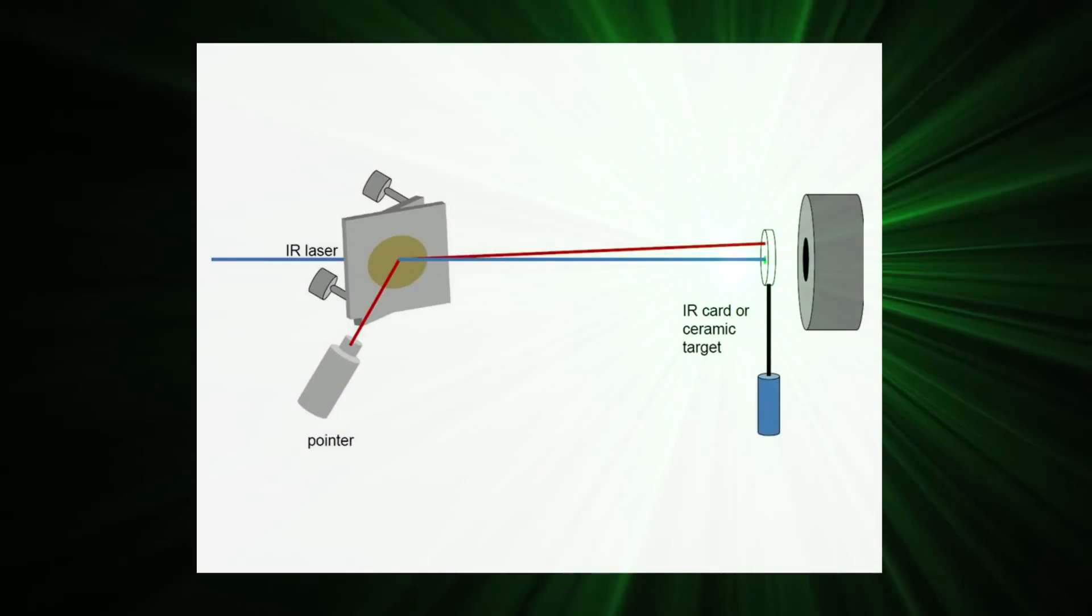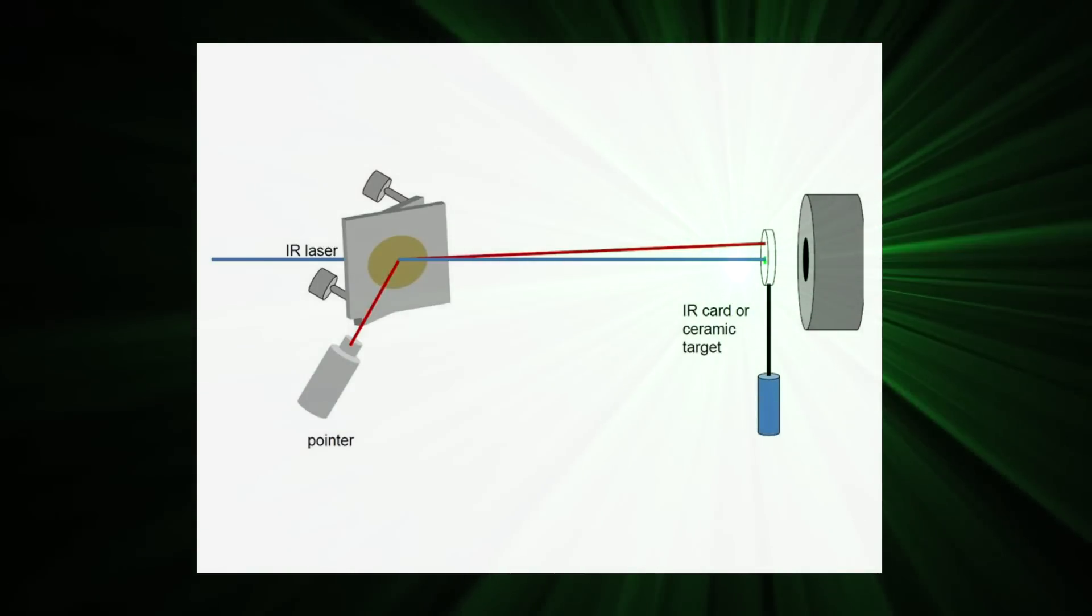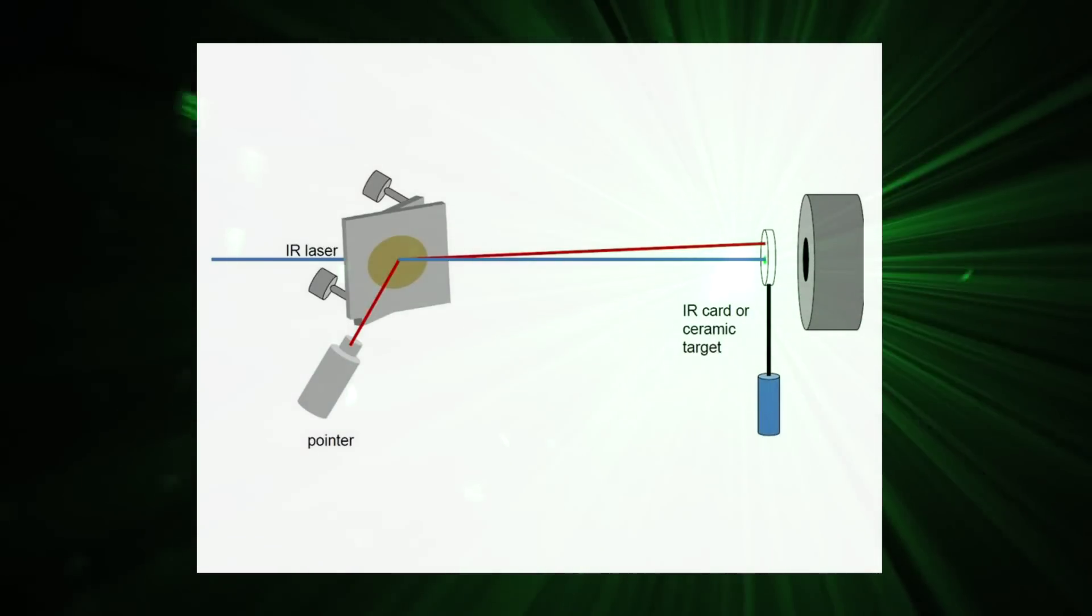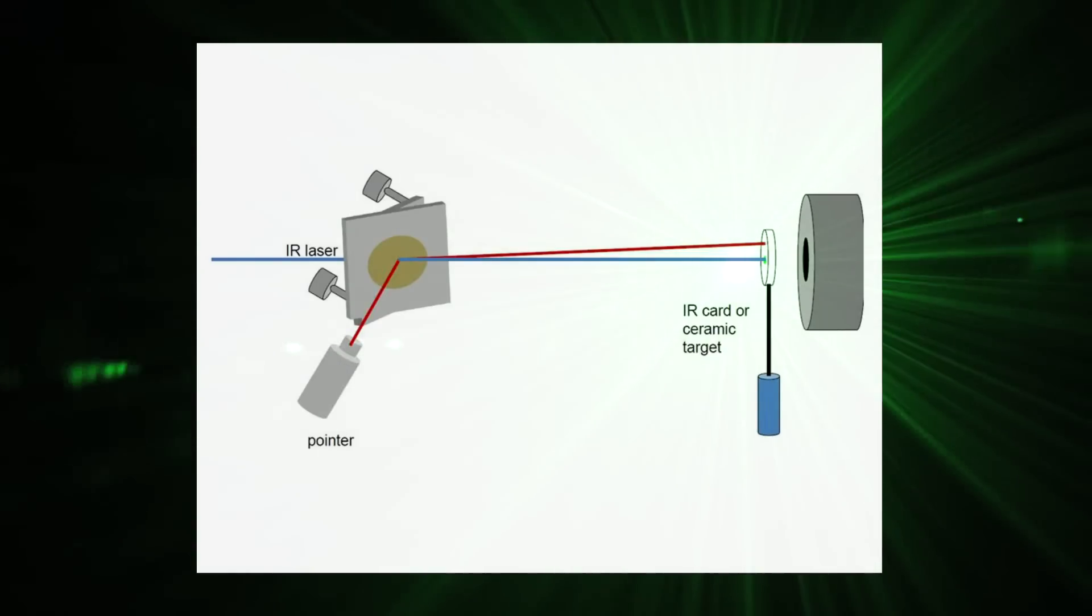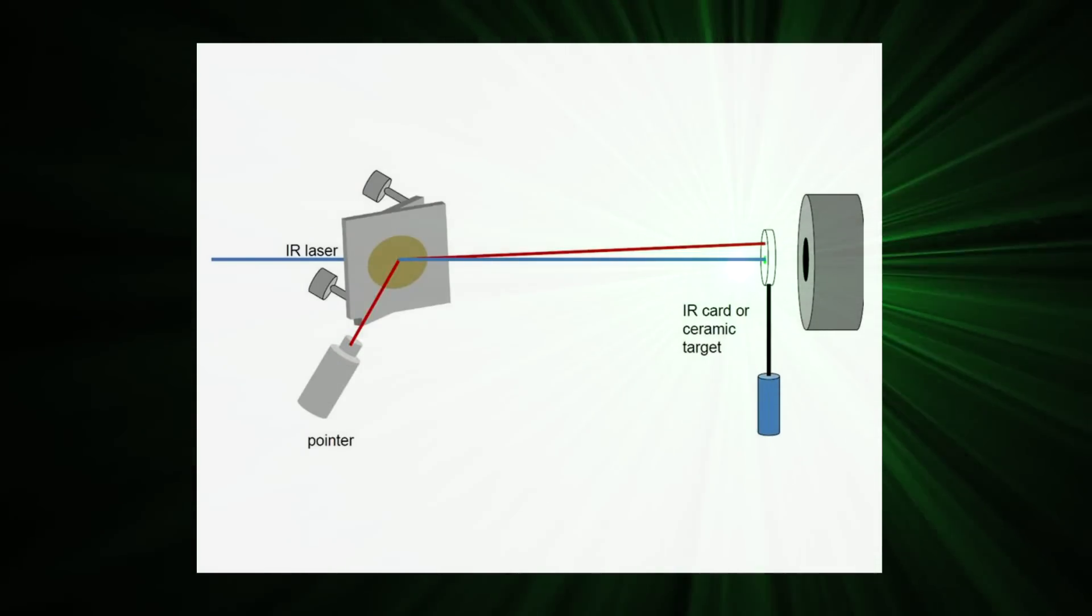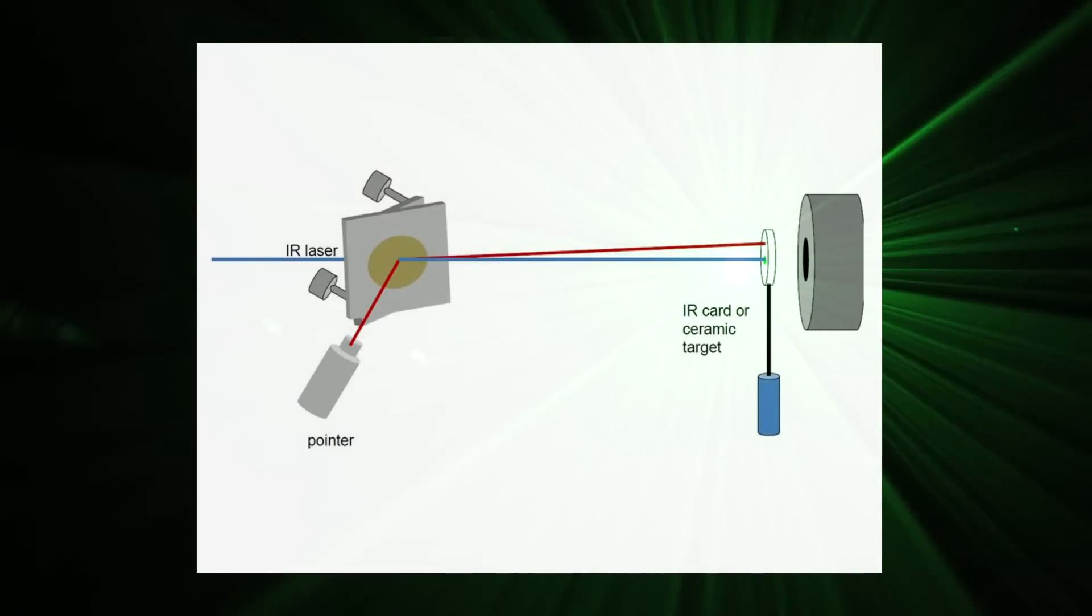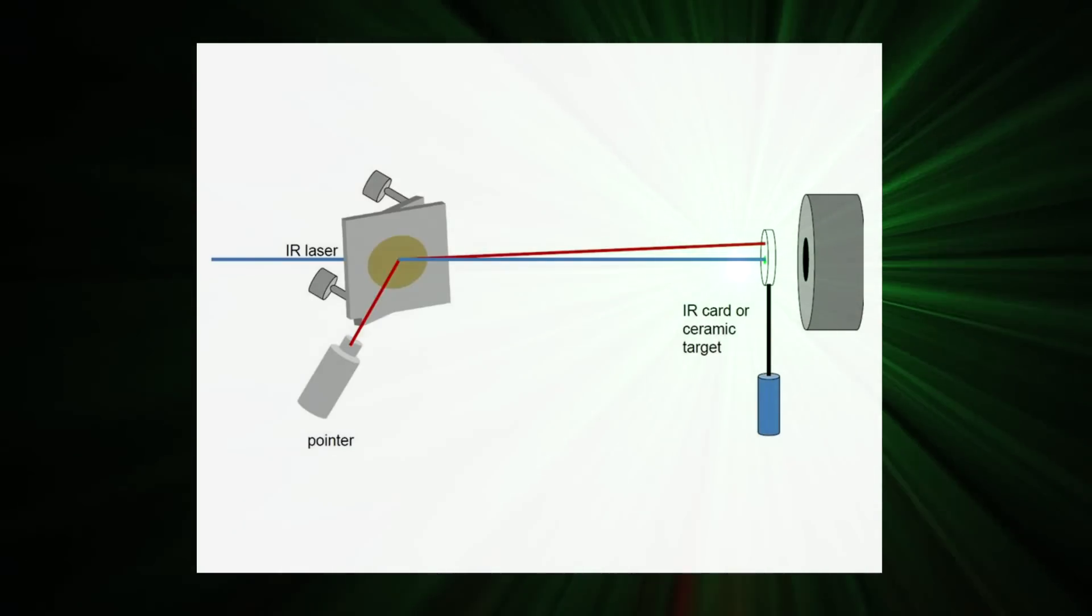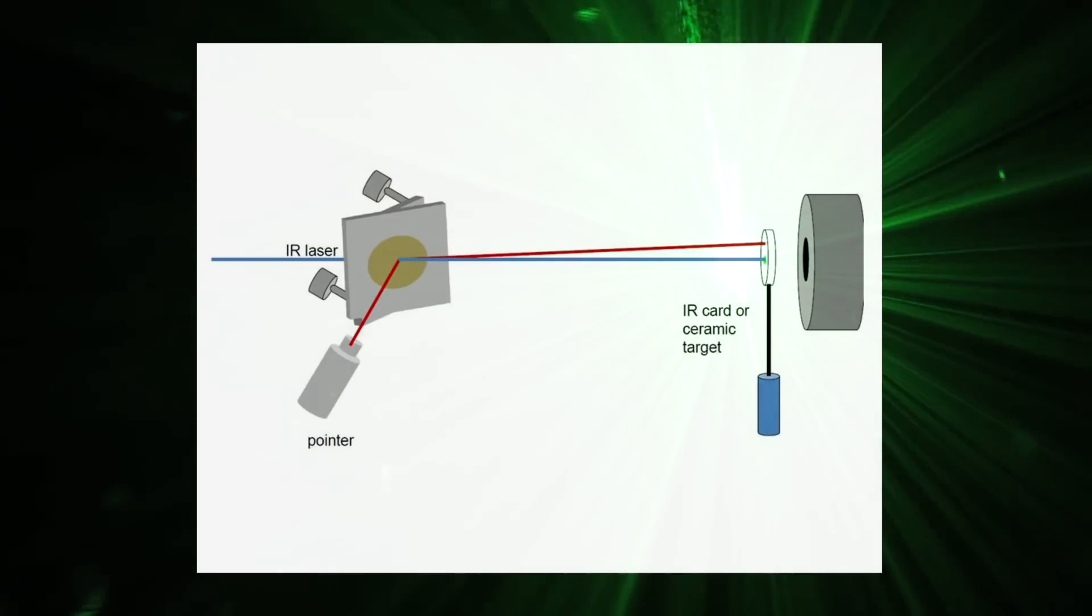Because we're farther away now, the two beams, which were only approximately aligned, are now again separated. Had we not done that first step of preliminary alignment though, we'd most likely not be able to get the two spots onto the same IR card at all.